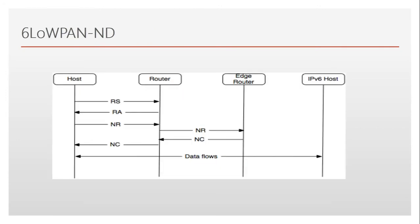In 6LoWPAN the Neighbor Discovery Protocol takes care of the fact that nodes do go to sleep and can wake up after hours. They have incorporated new kinds of messages: Node Registration and Node Confirmation. The Router Solicitation and Router Advertisement are the same as in IPv6 Neighbor Discovery, but we have new messages — NR and NC, which are Node Registration and Node Confirmation. Whenever any new device wants to be part of this mesh network, it has to register itself, and in response they reply back with Node Confirmation.